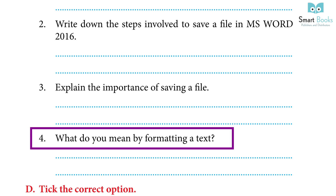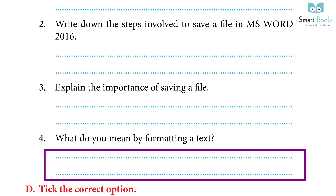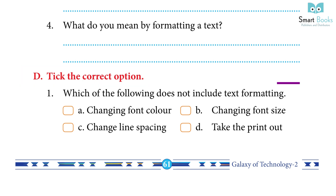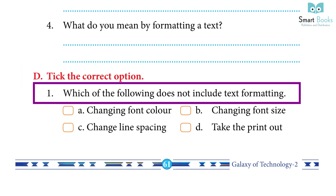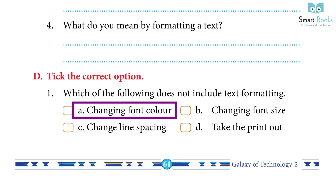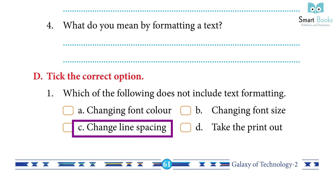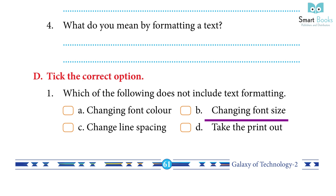Exercise C continued: 4. What do you mean by formatting a text? Formatting text in MS Word includes changing the font, bolding the text, and changing the font color and size. Exercise D — Multiple choice: 1. Which of the following does not include text formatting? Answer: D — Take the printout.